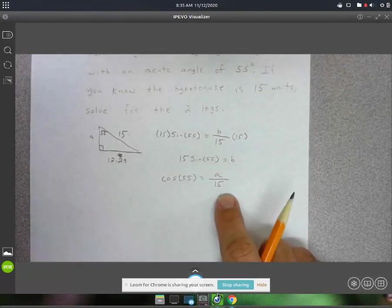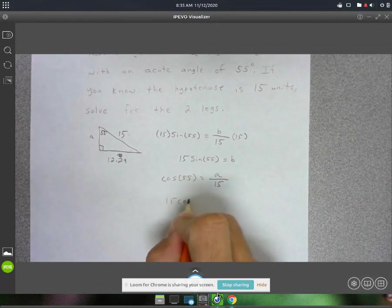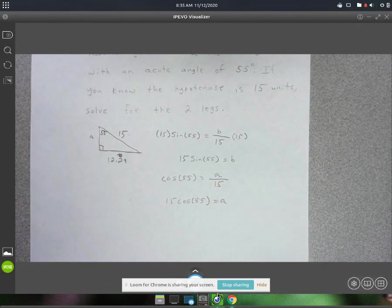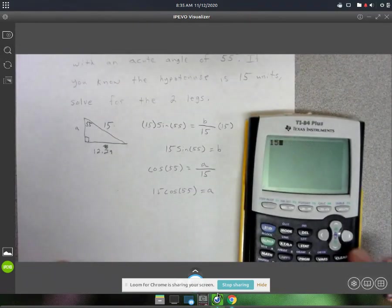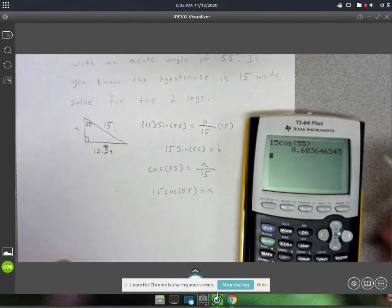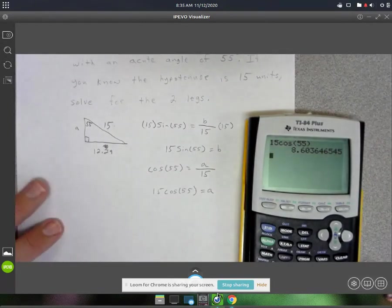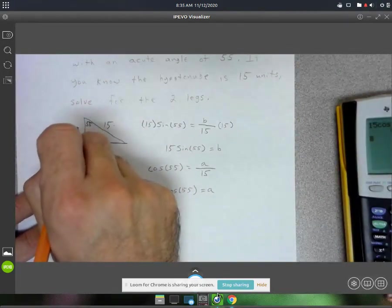So to solve this, again, you just multiply by 15. So you're going to get 15 cosine of 55, and that's equal to your A. So 15 cosine of 55, you get 8.6. So A is equal to 8.6.